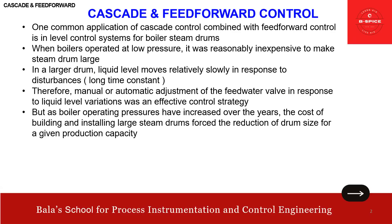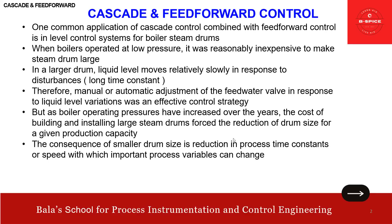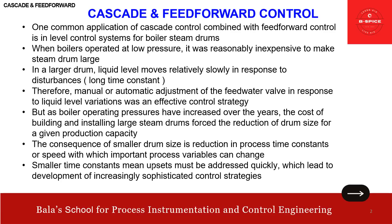But as boiler operating pressure increased over the years, the cost of manufacturing and installing large steam drums forced a reduction of drum size for a given production capacity. The consequence of the smaller drum size is a reduction in process time constant — the speed with which important process variables can change. Smaller time constant means upsets must be addressed quickly, which led to the development of increasingly sophisticated control strategies.